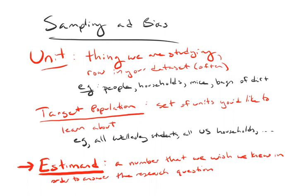It's not always going to be feasible to just calculate the parameter. Suppose I'm interested in how much mice weigh after feeding them a certain diet — am I going to be able to feed that diet to every single mouse in the world? Nope. Or suppose I'm interested in levels of some substance in soil samples from the Wellesley College campus — am I going to dig up every single soil sample and test it? No, because then we would have no campus.